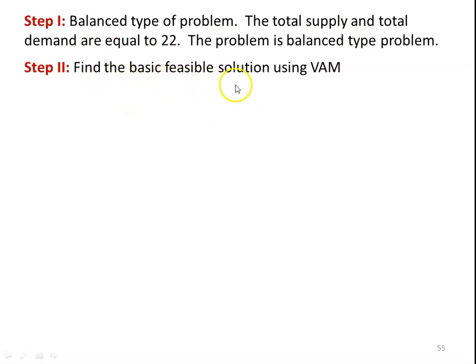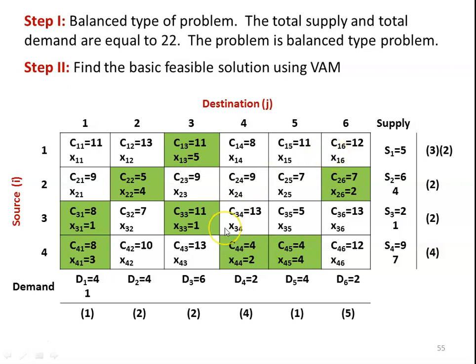We find the basic feasible solution using Vogel's Approximation Method. In this method we find the difference between the cell values horizontally and vertically. For every row and every column we find the difference between the lowest and the next lowest cell value. For the first row, the lowest value is 8, the next lowest is 11, and the difference is 3. For the second row, the lowest value is 5, the next lowest is 7, and the difference is 2.